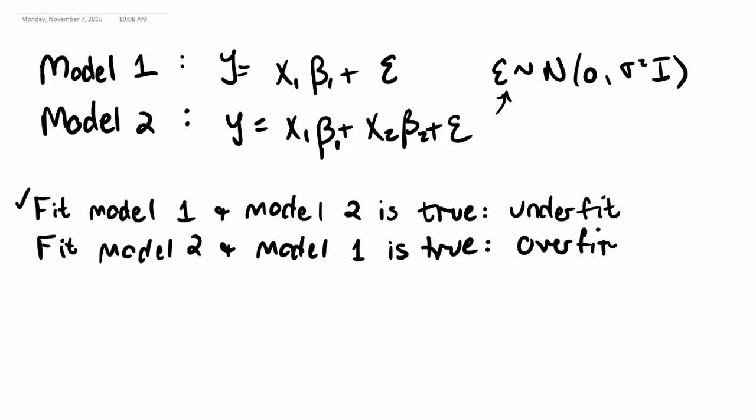So recall we have two models under consideration. Model 1 is y equal to x1 beta 1, this one right here. Model 1 is y equal to x1 beta 1 plus error. And then model 2 is where y equals x1 beta 1 plus x2 beta 2 plus error. Right now, first we're going to consider this underfitting case. We fit model 1, but model 2 is actually true. So we've underfit the model.